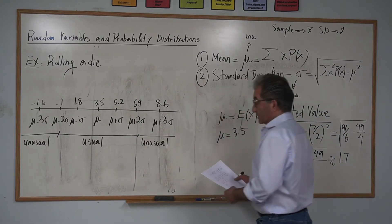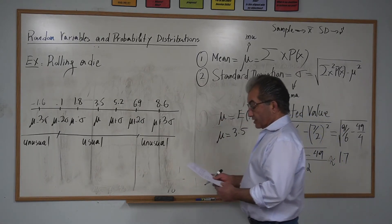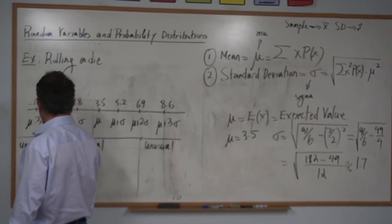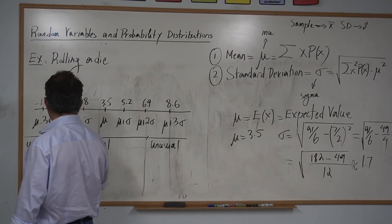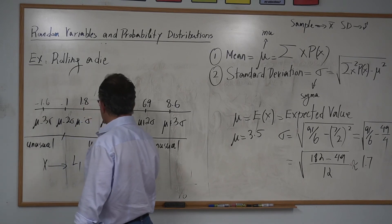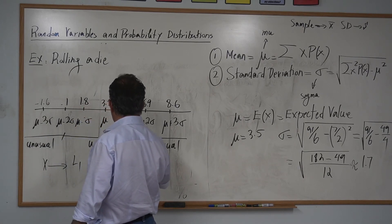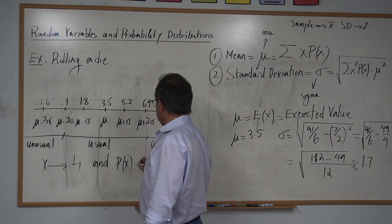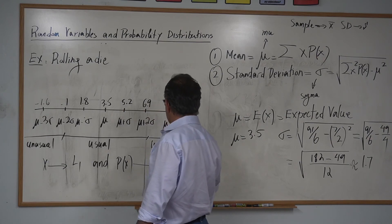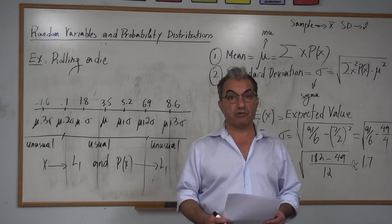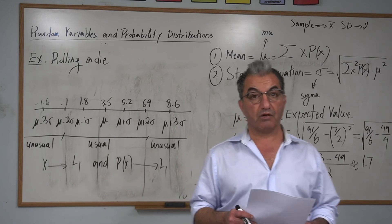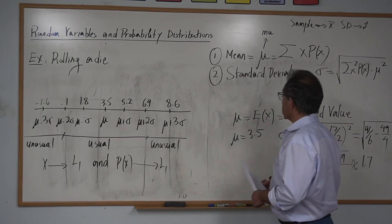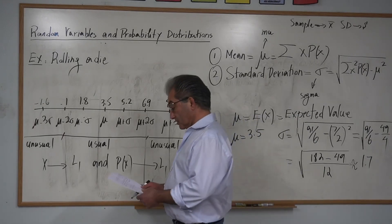If you want to use your calculators, you can take the X values and put them in L1, take the probabilities from the table and put them in L2. Then go to one-variable stats and the calculator will give you the mean and the standard deviation.